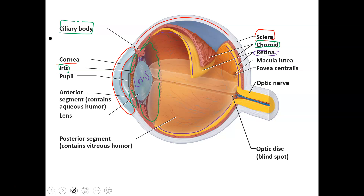Also in the middle of the eye, and kind of hard to point to because it's a hole, is the pupil. The pupil can change size based on the iris — if the iris opens up, the pupil gets bigger, and if the iris closes down, the pupil gets smaller. This is done in response to how much light is available: lots of light means a small pupil, and a dark room means a larger pupil.